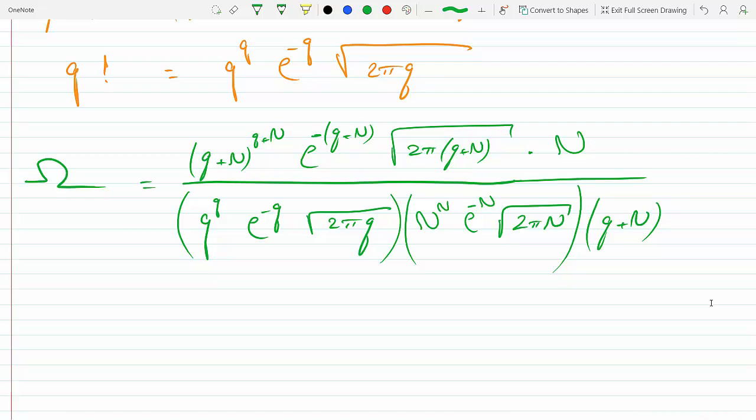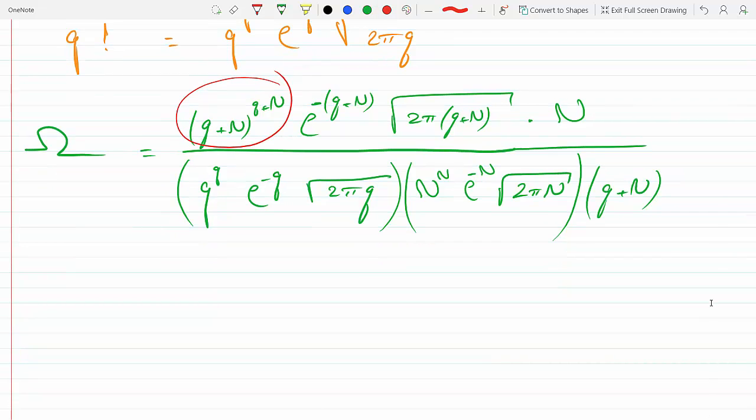The final result: notice that the first expression is (q+n) over q to the q. So this guy here I could split it up into (q+n) to the q times (q+n) to the n. And since I have a q in the denominator, I could group this q underneath this.